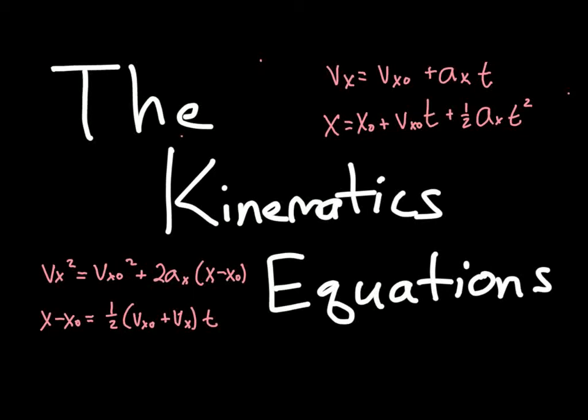So much of what we do in physics involves at least one calculation using the kinematics equations, simply because some of these measurements of motion are tough to measure directly. It's much easier to make other measurements and then calculate some of these things. Acceleration really requires some specialized tools to measure directly. It's certainly easier to measure something like a couple of velocities at a time and then calculate an acceleration. So we use these a lot, but where do they come from?